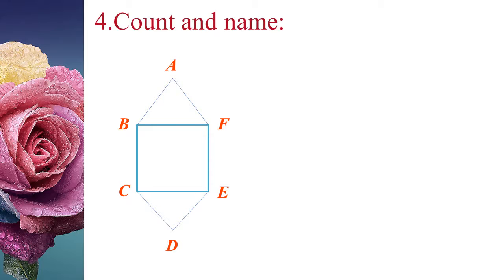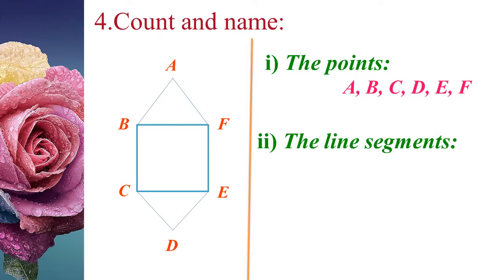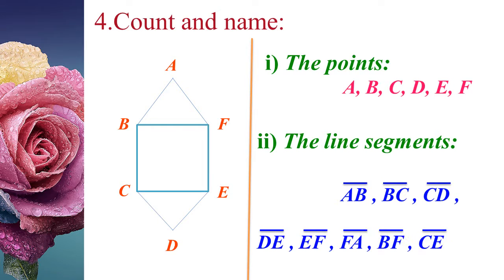The fourth problem — count and name. The points are A, B, C, D, E, and F. The line segments are AB, BC, CD, DE, EF, FA, BF, and CE.